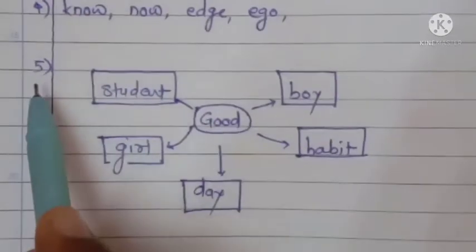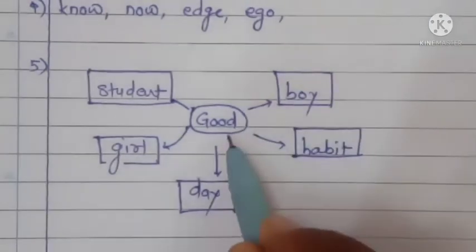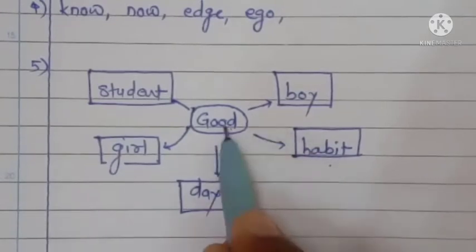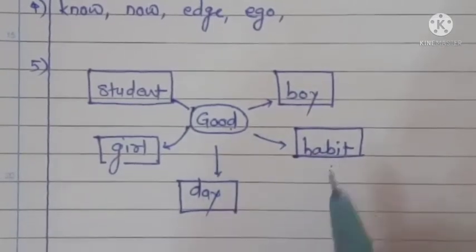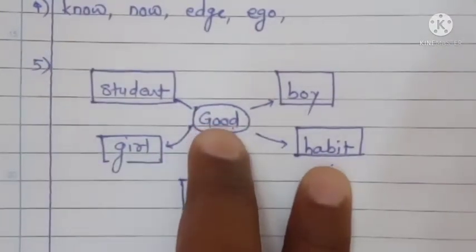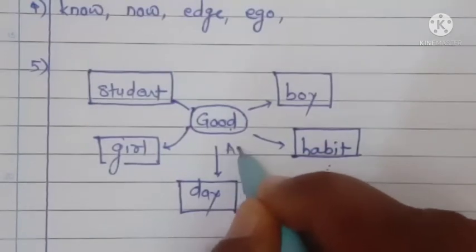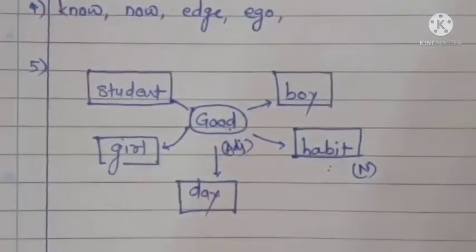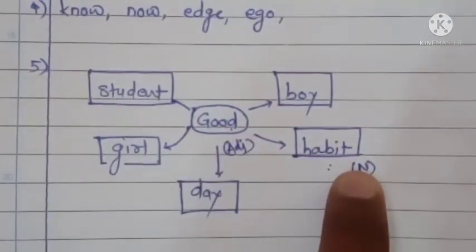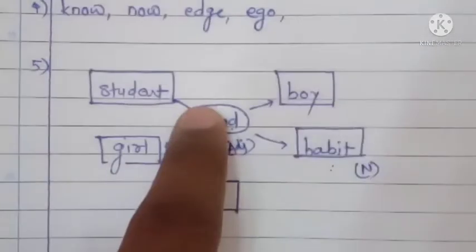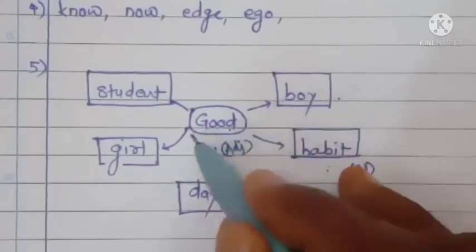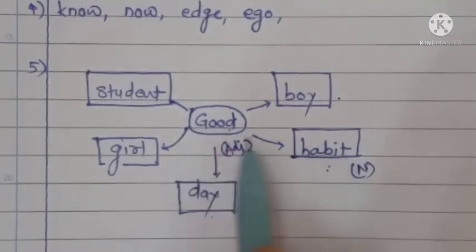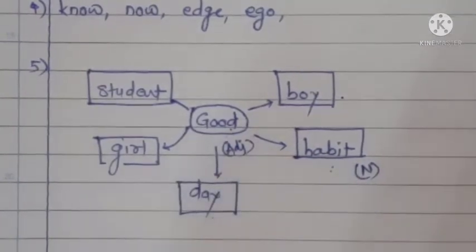Now the fifth activity. A word is given — 'good' — and the answer here is 'habit'. So: good habit. When you study this pattern, 'good' is an adjective. Good boy, good student, good girl, good day — so when you understand this pattern, note that students who don't follow this method may make errors.